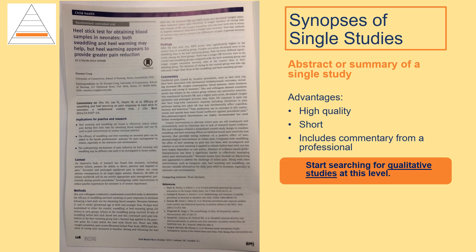The next level of the pyramid is synopses of single studies. A synopsis is a summary or abstract — in this case, what is being summarized is one single study. Some advantages of a synopsis are that the single study had to be of high quality before it would be included in an abstracting journal. It's short — what you see on the screen is the full synopsis. And in most cases, it will include commentary written by a professional in the field who will give real-world application to the information provided in the study.